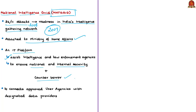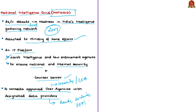NATGRID is conceived as an information technology framework which connects approved user agencies with designated data providers. The user agencies could be security agencies and law enforcement agencies, while the data providers will be airlines, banks, SEBI, railways, telecom industry, etc. The information or intelligence received will be analyzed by the security agencies and used for synergizing efforts to enhance the country's counterterrorism capability. The National Intelligence Grid will link 21 agencies, with citizen databases available with banks, telecom firms, tax bodies and immigration department.